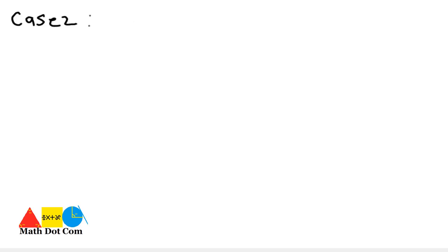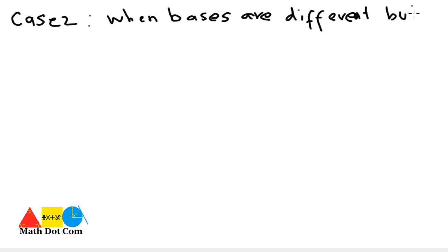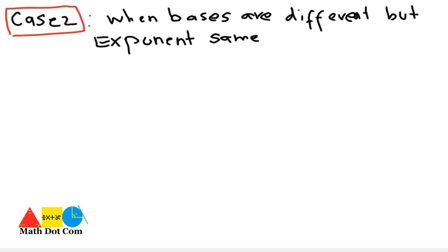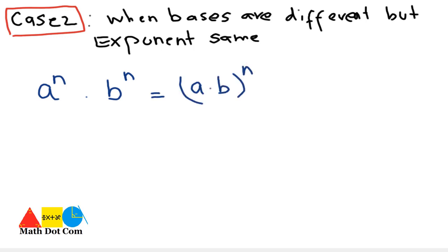Case 2 is the opposite: when the bases are different but the exponent is the same. In generic form, 'a' is one exponential number with power n, and 'b' is another exponential number with power n. They have the same power but different bases, with a product sign between them. You simply multiply the bases together and place the power once on the result.